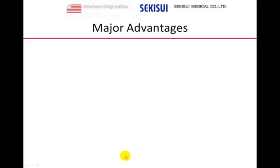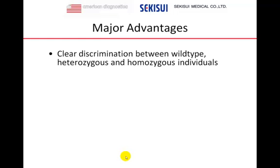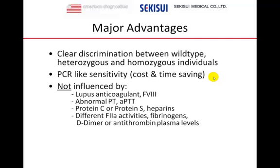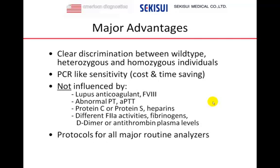What are the major advantages of the assay? First, a clear discrimination between wild type, heterozygous, and homozygous individuals. Second, a sensitivity very similar to polymerase chain reaction, and in contrast to the molecular biological PCR technology, a cost and time saving. The testing can be done with standard clotting instrumentation, the assay is not influenced by a variety of coagulation abnormalities, and protocols are available for all major routine analyzers.